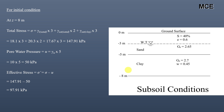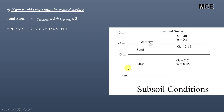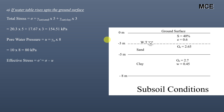For Case 1, the water table rises up to the ground surface. The partially saturated sand also becomes saturated, so total stress = γsat(sand) × 5 m + γsat(clay) × 3 m = 20.3 × 5 + 17.67 × 3 = 154.51 kPa. Since the water table is now at the ground surface, pore water pressure = 10 × 8 = 80 kPa.